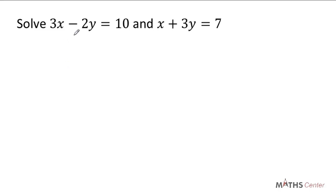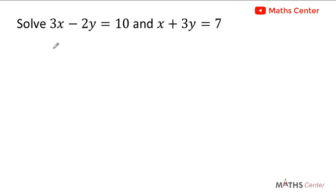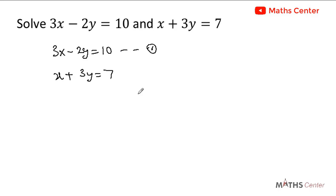Solve 3x minus 2y equals 10 and x plus 3y equals 7. These are two linear equations with two variables and so we will solve them simultaneously for the values of x and y. The first one is 3x minus 2y equals 10, which I'll call equation 1, and the second one is x plus 3y equals 7, which I'll call equation 2.